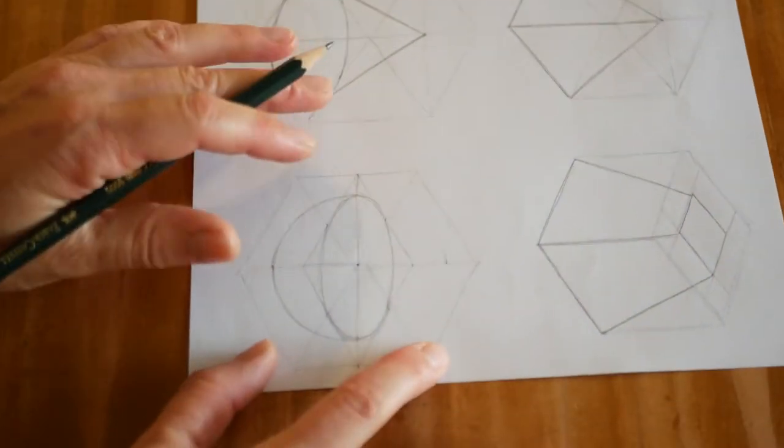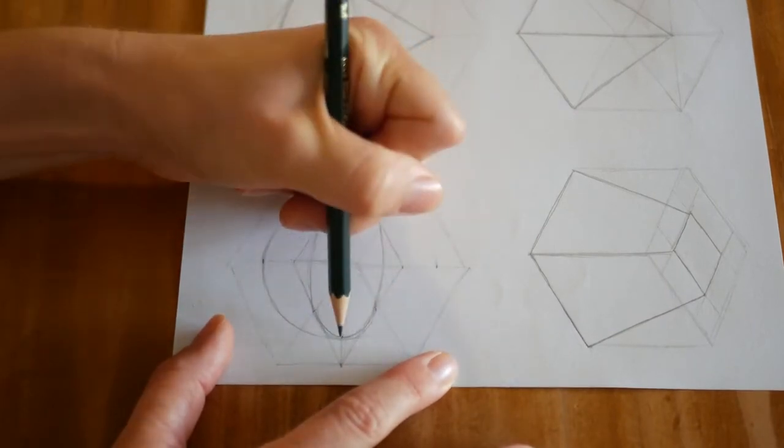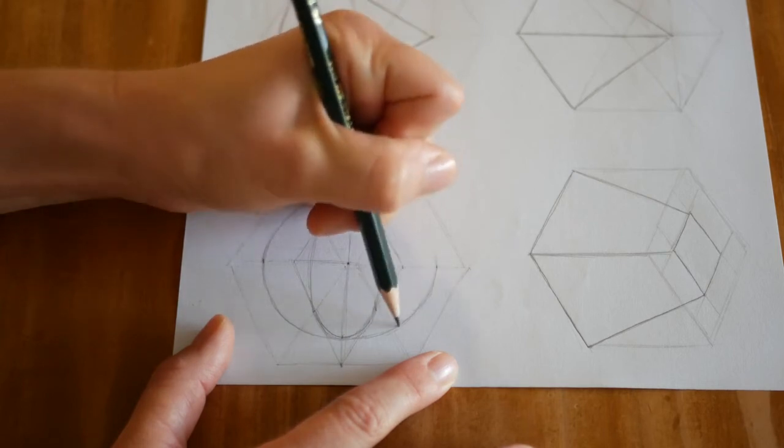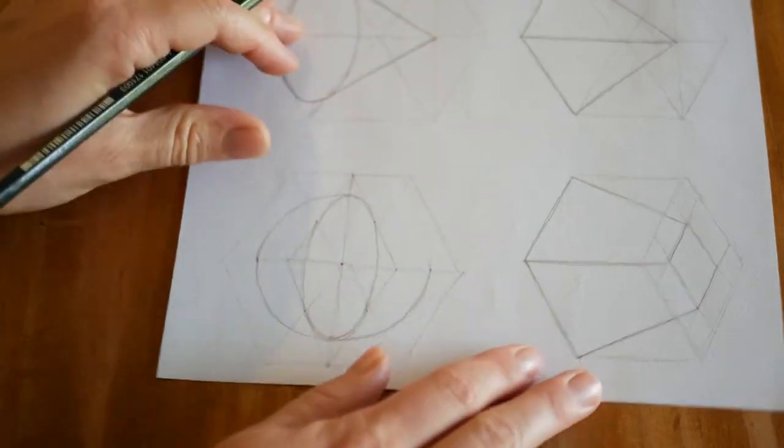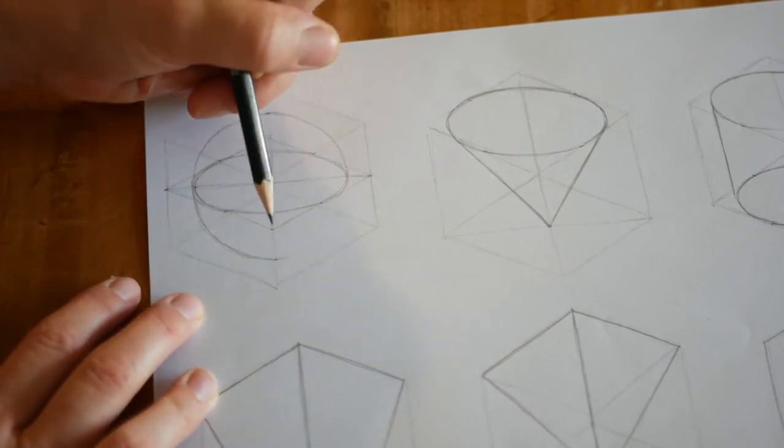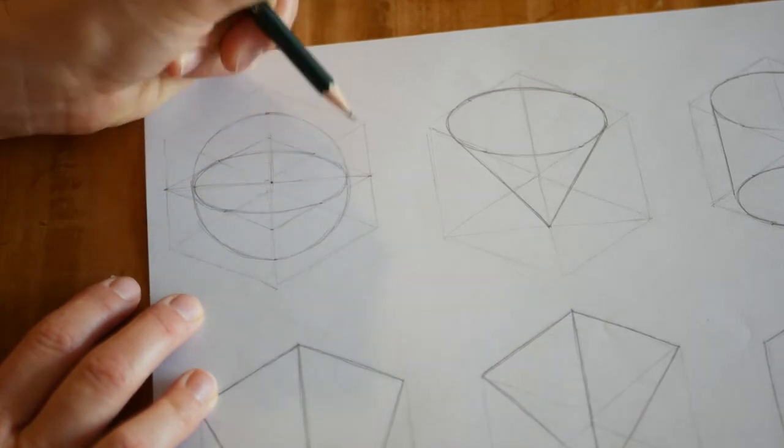Remember, you might find it easier to rotate the paper and use the curve of your wrists as you draw to create your curves, your circle. So I'm just joining those points up. I would say, just looking at my picture, I would probably bring my top point down a bit.